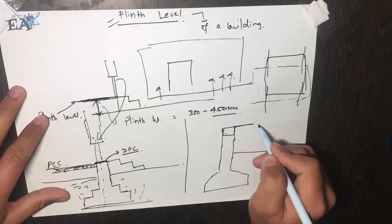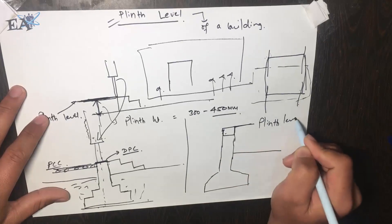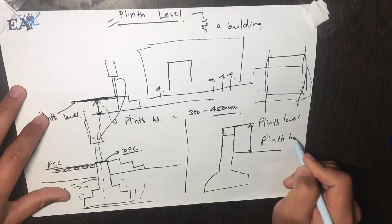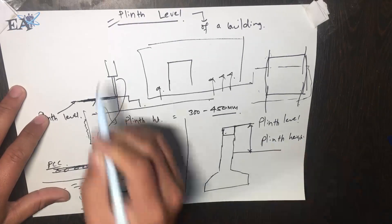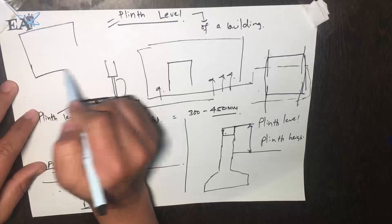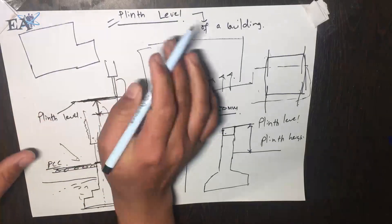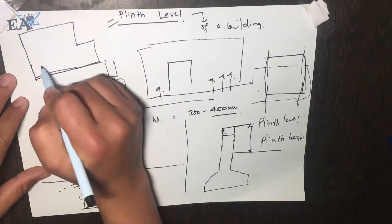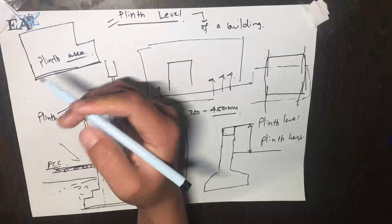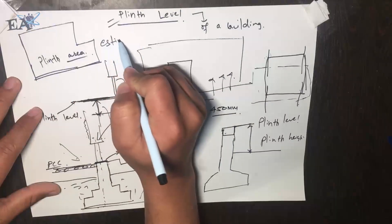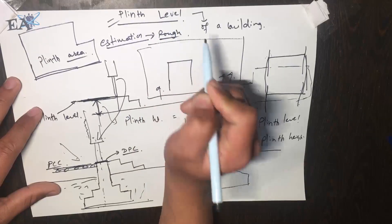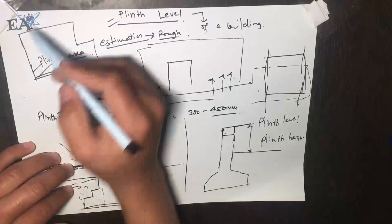In a frame structure, the top of this tie beam is called the plinth level, and the height from the ground to this level is the plinth height. If we look at the plan of the ground floor, the area covered by the building outline is called the plinth area. The plinth area is very useful for doing rough estimations of building costs.